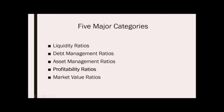There are five major categories of ratio analysis, namely Liquidity, Debt Management, Asset Management, Profitability, and Market Value ratios.